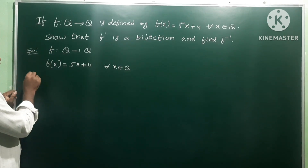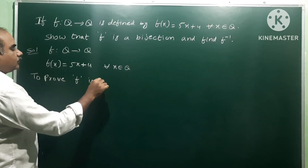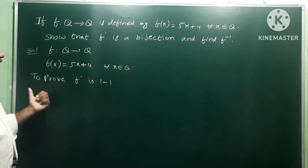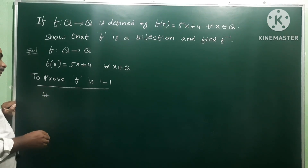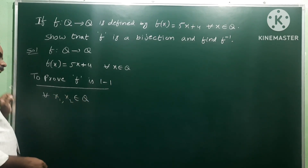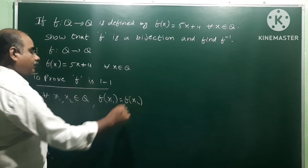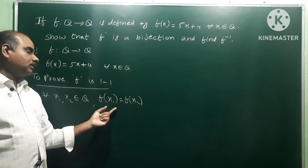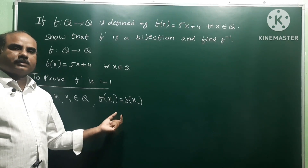To prove f is a bijection, we prove it is one-to-one and onto. For the one-to-one proof, we take two elements from the domain: for all x1, x2 belonging to Q. We assume f(x1) = f(x2) and show this implies x1 = x2.